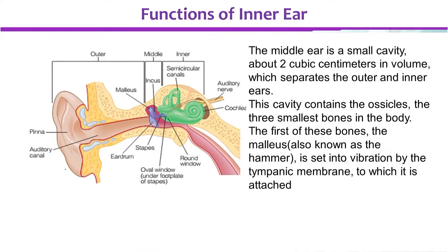The middle ear is a small cavity — چھوٹی سی space ہے — of about 2 cubic centimeters. In this cavity there are bones which we call ossicles.